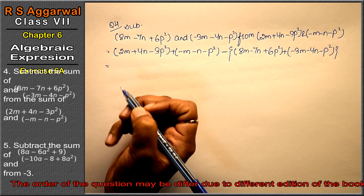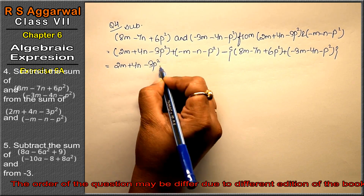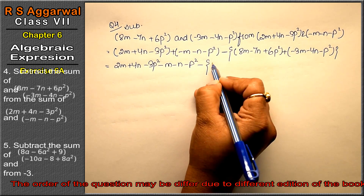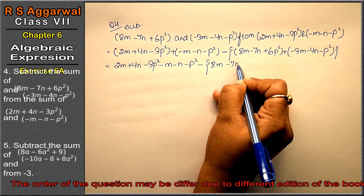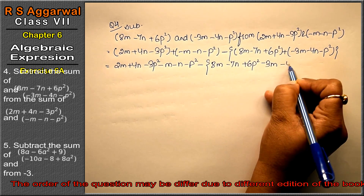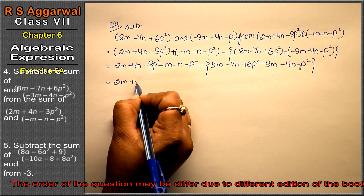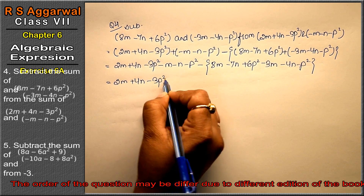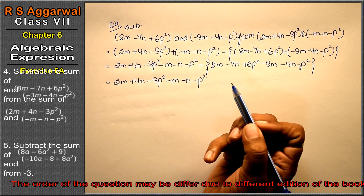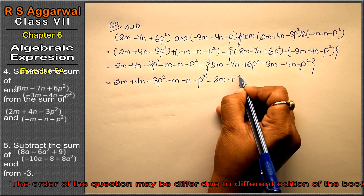Now I open the brackets. We have 2m plus 4n minus 3p² plus, and then the bracket with minus m minus n minus p². From this we subtract 8m minus 7n plus 6p², plus the bracket with minus 3m minus 4n minus p². Opening the brackets: 2m plus 4n minus 3p² minus m minus n minus p². Since there is a minus outside the bracket, all signs inside change.